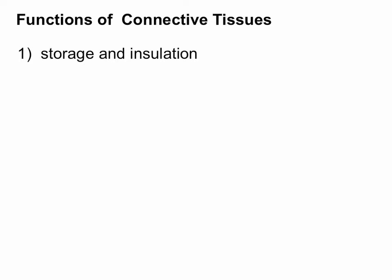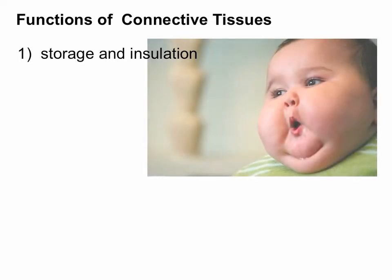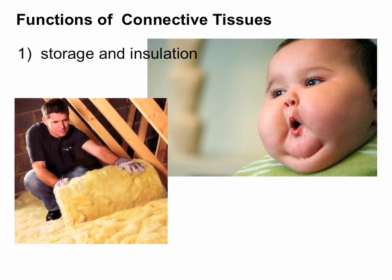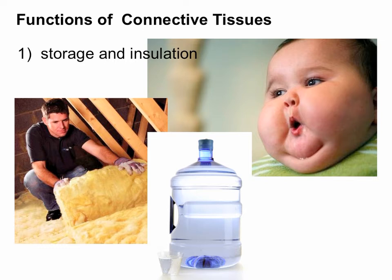So what do they do? Because there are so many different types, and because they are found in so many different places, they have lots and lots of different jobs depending on what kind of connective tissue they are, and some of them overlap. So let's go through the functions. Storage and insulation: fat stores energy, but it also insulates the body to help maintain heat. Some connective tissue is actually a place for water to be stored.